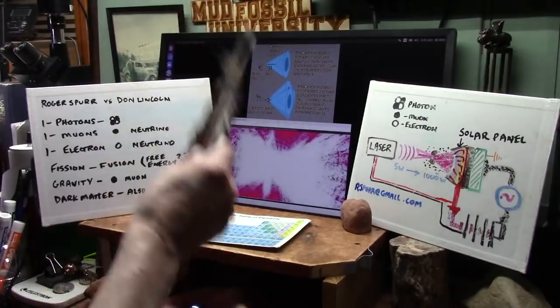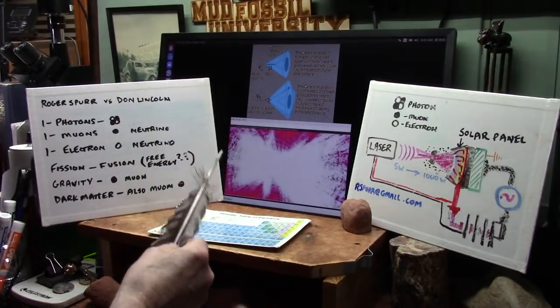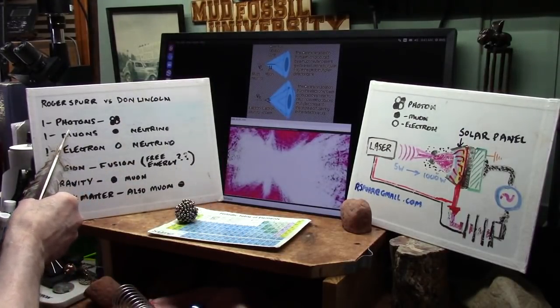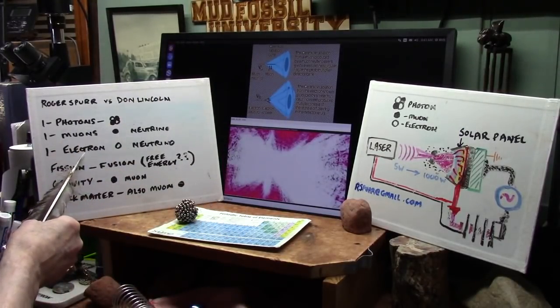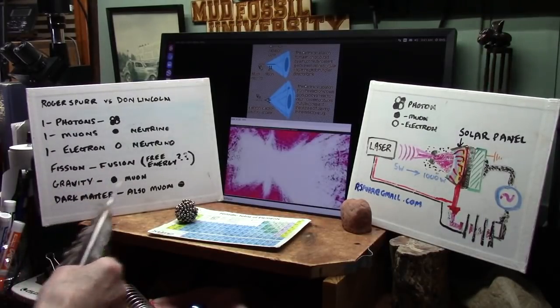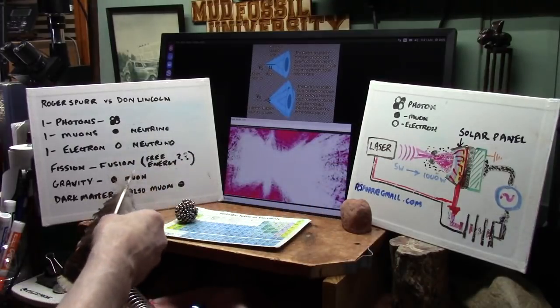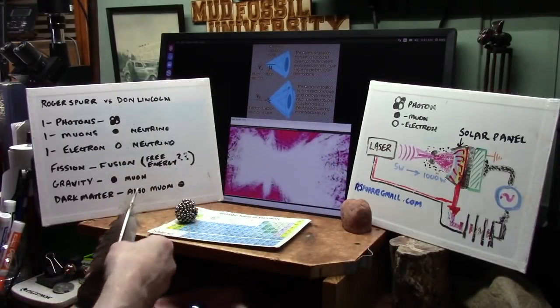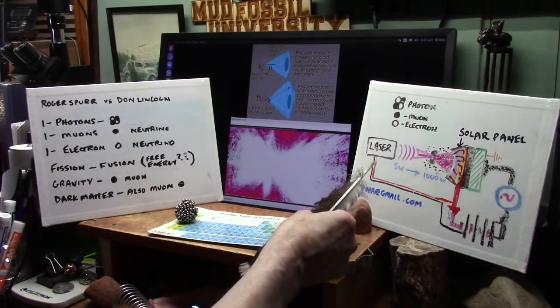Now my claim is that photons, muons, electron neutrinos, fission, fusion, gravity, and dark matter - I have solved all of these with our light experiments.